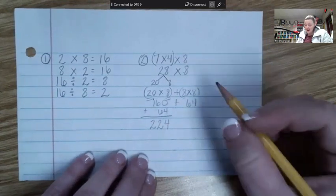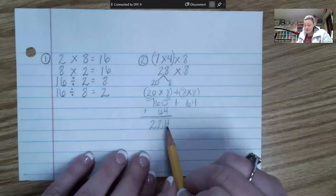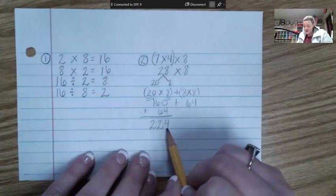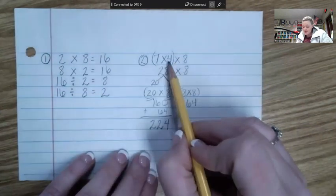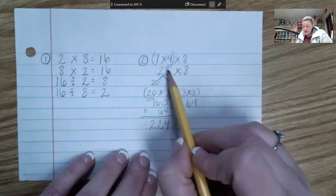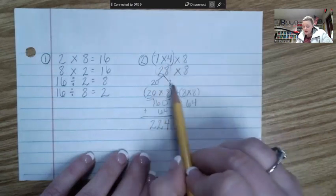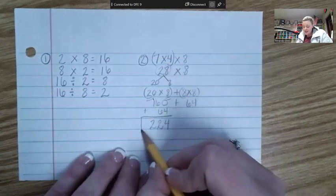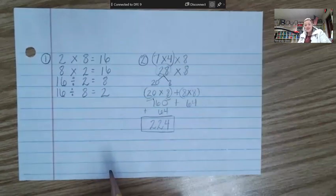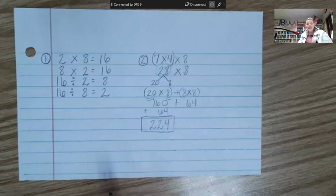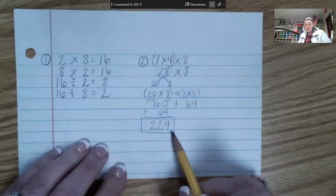So now that we have 224, now we have to go back and think about our problem. 7 times 4 was 28. And then 28 times 8, we broke it apart. And our final answer is 224. Now, does that make sense? It does. It does. If we took the number 28 and we added it 8 times, we would get 224.